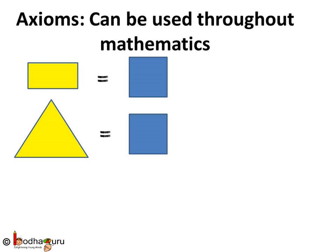Few assumptions could be used throughout mathematics which are called axioms. For example, things which are equal to the same thing are equal to one another.